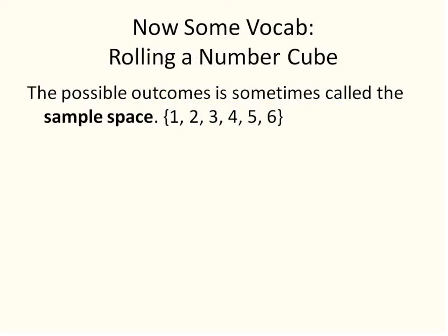A couple of pieces of vocabulary you may see when dealing with probability. The possible outcomes is sometimes called the sample space, sample size, or just the sample. When you're talking about probability, you'll often hear the term sample space, which means the possible outcomes. It's listed as a set — for example, the sample space of rolling a number cube would be one, two, three, four, five, six.